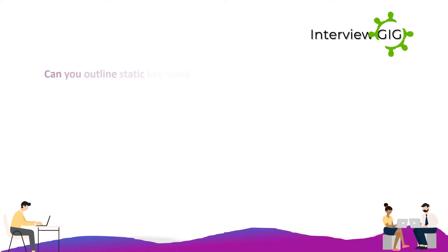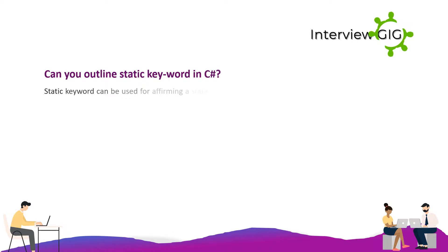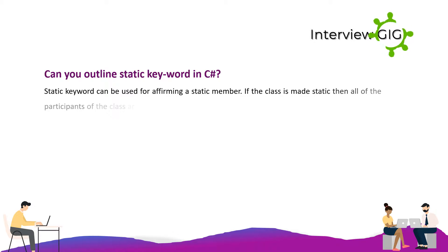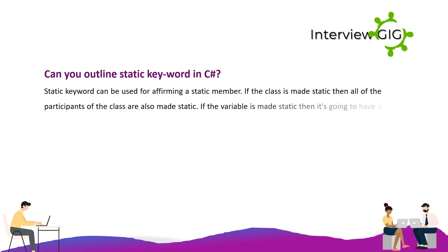What is the static keyword in C#? The static keyword can be used for declaring a static member. If the class is made static, then all members of the class are also made static. If a variable is made static, it will have a single instance and any value change is updated in that instance.